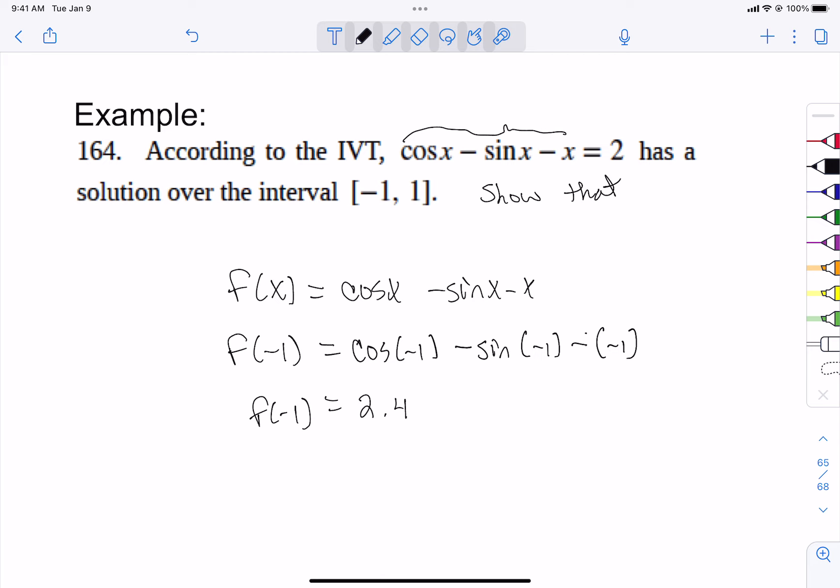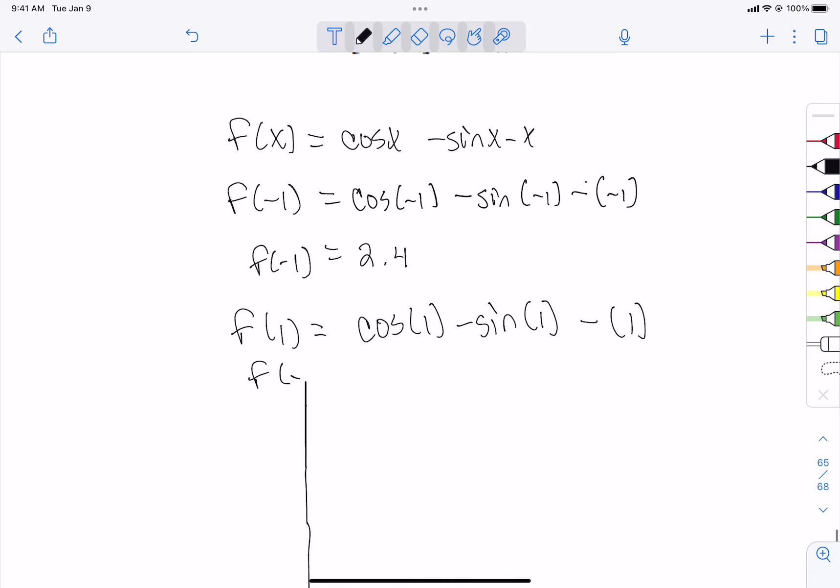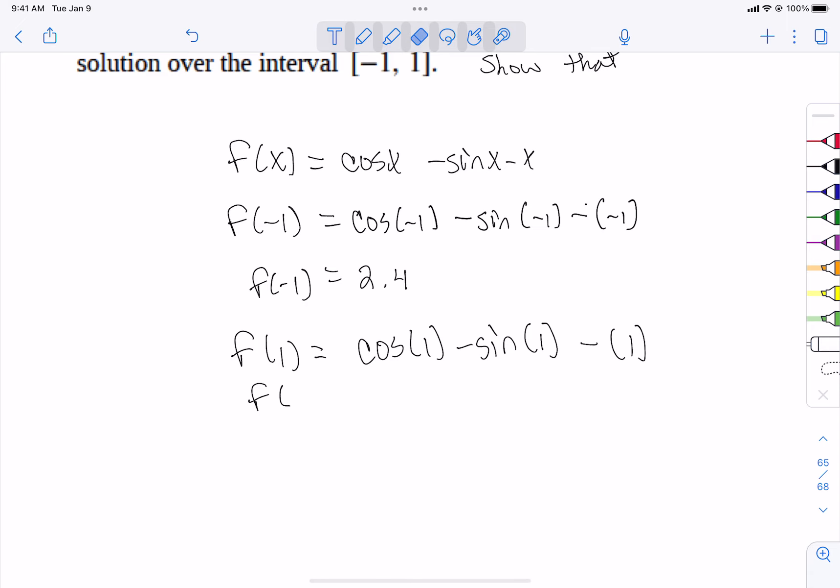Now I'm going to draw a very crude picture of it. It's not going to be correct, and we'll pull it up on Desmos because that's going to be much more accurate than what I can do. And now let's try f of 1. So that's the cosine of 1 minus the sine of 1 minus 1. So f of 1 is about negative 1.3.